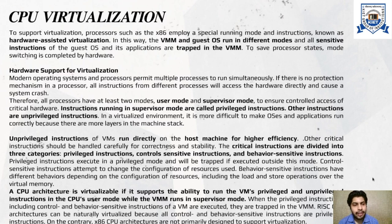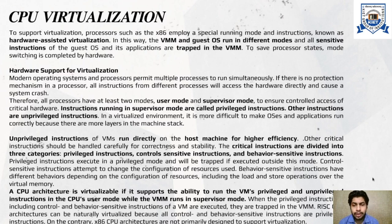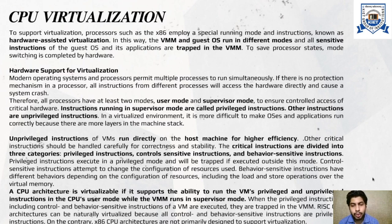Critical instructions are divided into three categories: privileged instructions, control-sensitive instructions, and behavior-sensitive instructions. Privileged instructions execute in privileged mode and will be trapped if executed outside this mode. Control-sensitive instructions attempt to change the configuration of resources. Behavior-sensitive instructions have different behaviors depending on the resource configuration, including load and store operations over virtual memory. A CPU architecture is virtualizable if it supports running a VM's privileged and unprivileged instructions in CPU user mode while the VMM runs in supervisor mode.